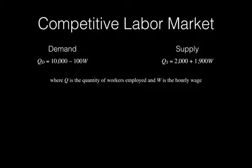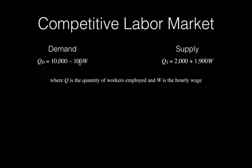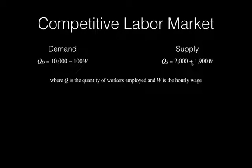We're going to be taking a look at a labor market, and we're given the demand and supply functions. The demand for labor — the quantity demanded of labor — is going to be equal to 10,000 minus 100W, where W is the hourly wage rate, and the quantity supplied is equal to 2,000 plus 1,900W.